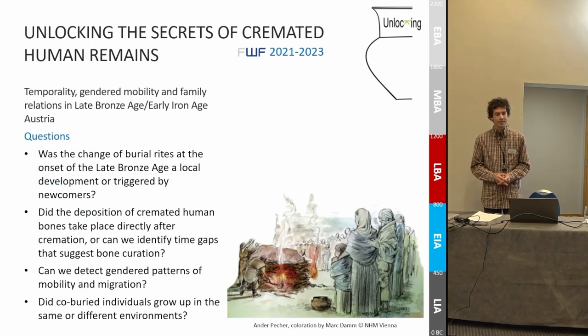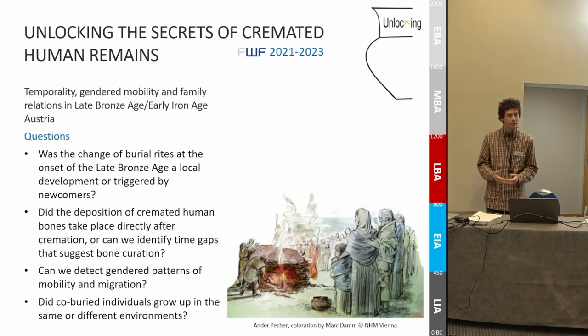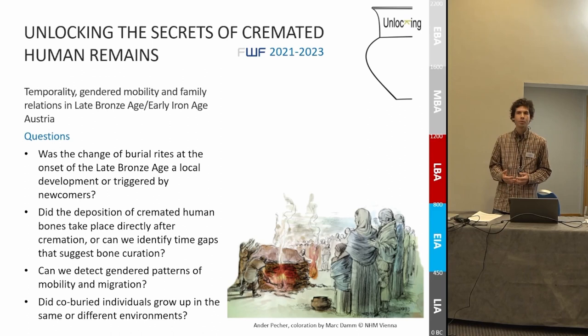The aim of this project is to gain insight into temporality, gendered mobility, and family relations in late Bronze Age and early Iron Age Austria, asking some specific questions. Was the change of burial rights at the onset of the late Bronze Age a local development, or was it triggered by newcomers? Did the deposition of cremated human bones take place directly after the cremation, or can we identify time gaps that suggest bone curation? Can we detect gendered patterns of mobility and migration? And did co-buried individuals grow up in the same or in different environments?